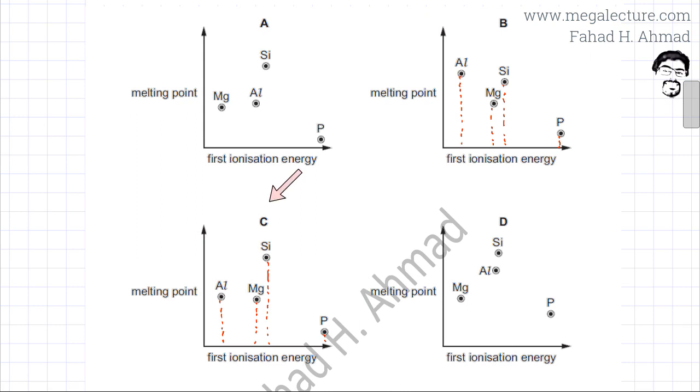So this graph, option C, is going to be correct because the horizontal axis is plotted correctly. Aluminum having the lowest ionization energy, followed by magnesium, then silicon, then phosphorus. And the melting points, the vertical axis is also correct.